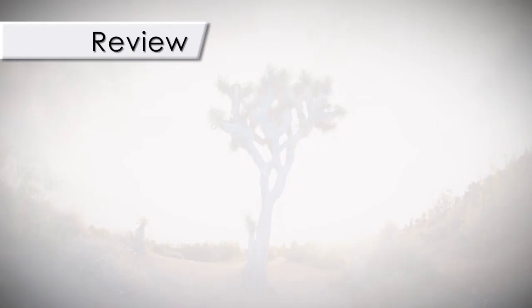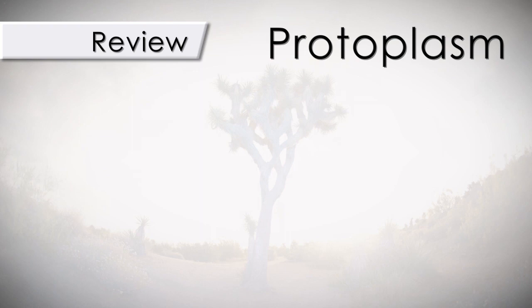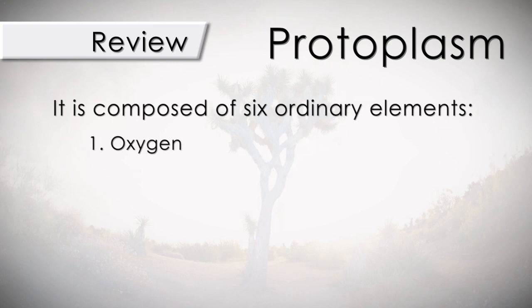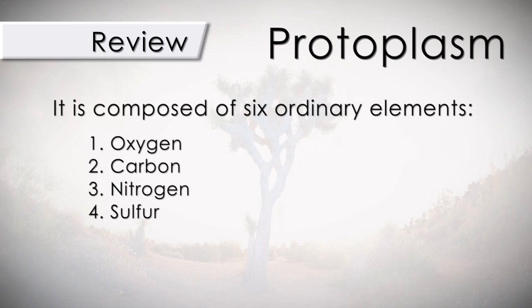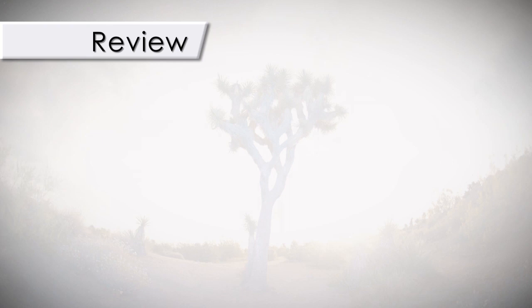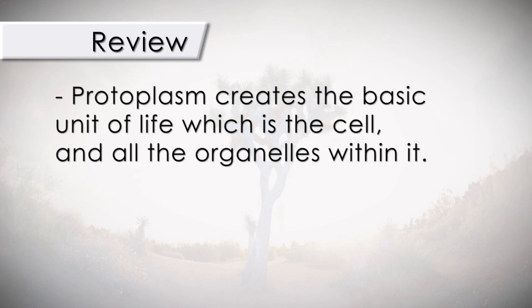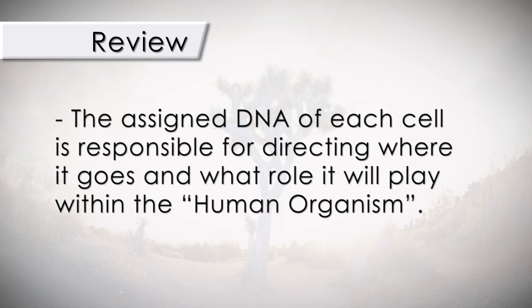Before we move on, here's a quick review of what we have covered in this video. Protoplasm is the basic substance of all life and is found in all living things. It is composed of six ordinary elements: oxygen, carbon, nitrogen, sulfur, hydrogen, and phosphorus. Protoplasm creates the basic unit of life, which is the cell, and all the organelles within it. The organelles are the essential components of the cell. The assigned DNA of each cell is responsible for directing where it goes and what role it will play within the human organism.